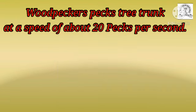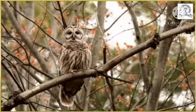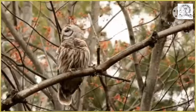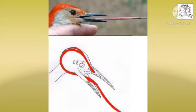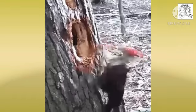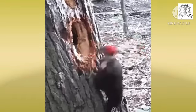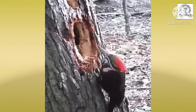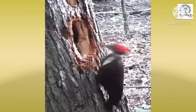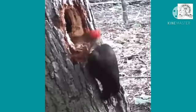So to summarize the amazing facts: the owl can rotate its head three-fourths of a circle; the woodpecker keeps its long tongue folded inside its head; and the woodpecker can pick a tree trunk at 20 picks per second.